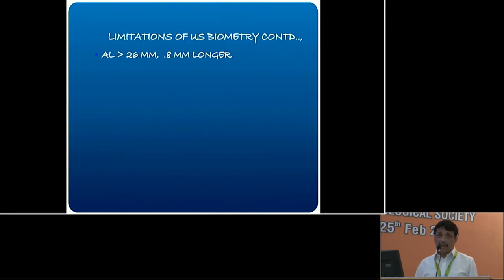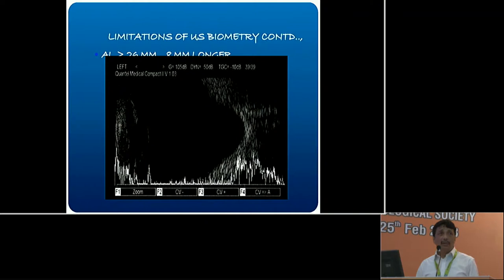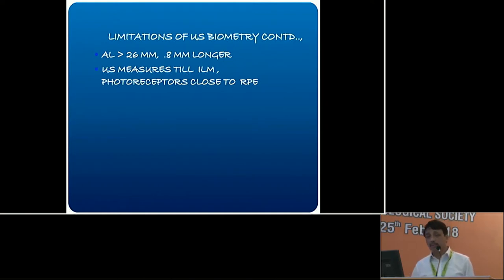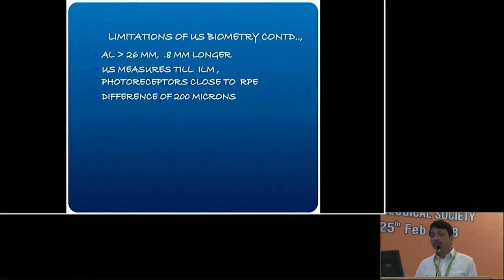You know what happens when the patient complains on the first post-op day. Particularly in staphylomatous eyes, the axial length may be off by as much as 3 mm, which can translate to a 9-diopter difference — not at all desirable on the first post-op morning. The second problem is that ultrasound measures axial length to the internal limiting membrane, but that's not the location of the photoreceptors, which are close to the RPE — about 200 microns behind. Optical biometry measures to the RPE, remedying this error.